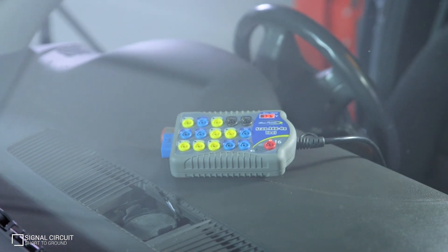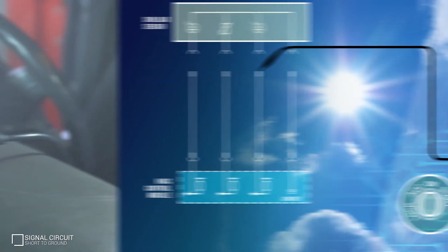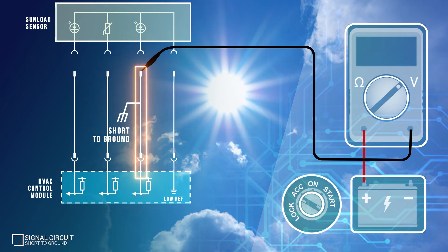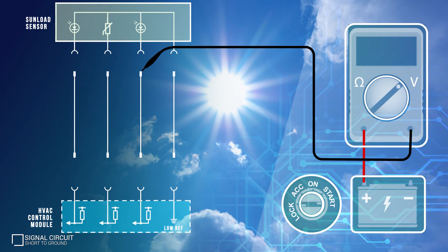If the affected circuit now displays battery voltage, then we've proved a short to ground. Turn the ignition off and disconnect the HVAC control module. Turn the ignition back on while watching the display.